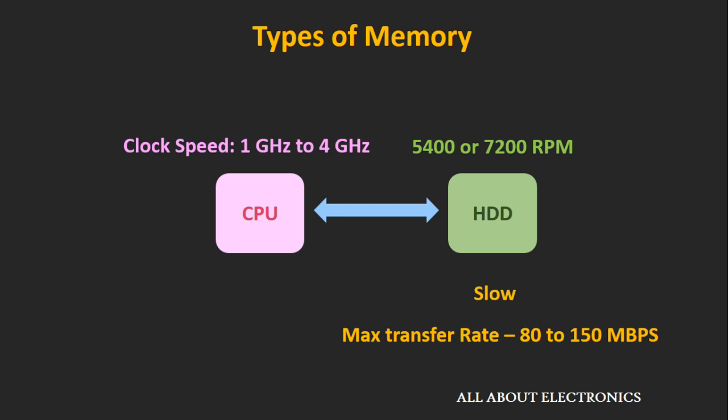The typical read or write speed of a hard disk drive is in the range of 80 to 150 MBps. But the clock speed of the CPU is in the range of 1 GHz up to 4 GHz. So even though the processor is capable of accepting data at a much higher speed, it cannot get the data through the hard disk drive at the same rate.